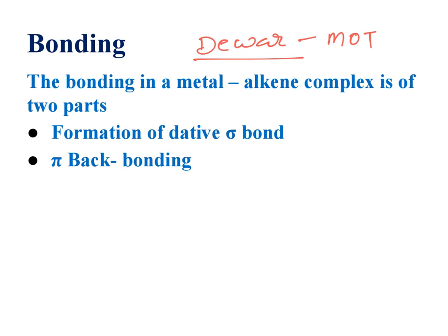When we are looking at metal-alkene complexes, there are two parts. One is formation of dative sigma bond. Another one is formation of pi backbonding. Let's discuss one by one.